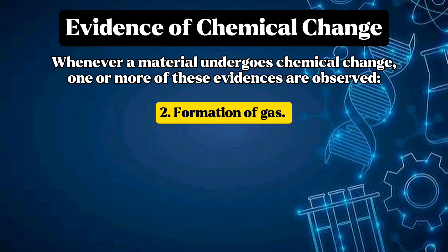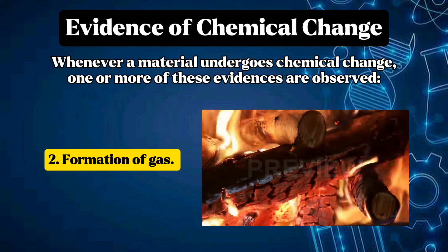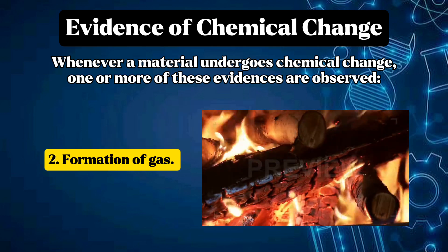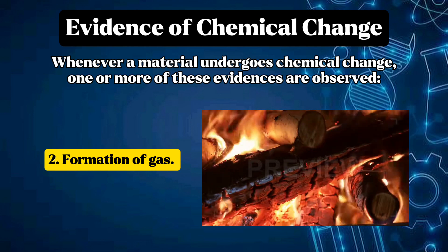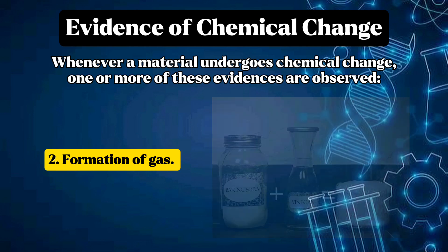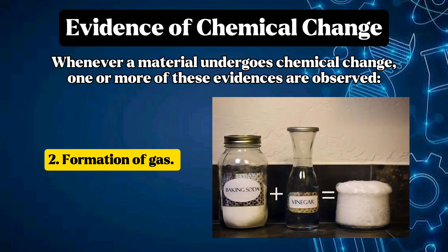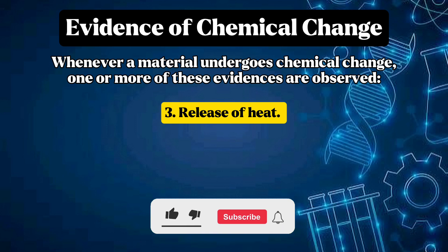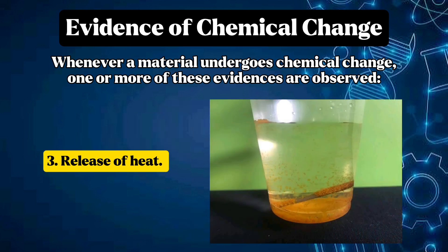Second: formation of gas — this evidence usually coincides with the formation of a new product. For example, when a material is burning, gas in the form of smoke is released together with the formation of ashes. When baking soda is mixed with vinegar, bubbles are formed as the baking soda starts to curdle. Third: release of heat — when a metal is soaked in an acid, heat is released as the metal starts to wear away due to the acid's strength.